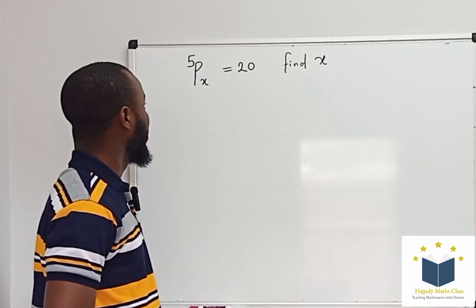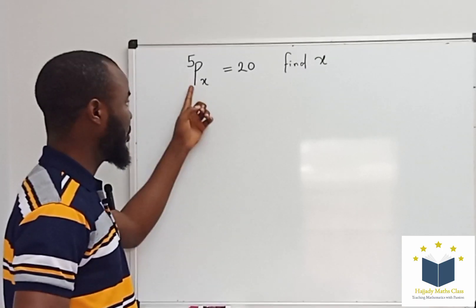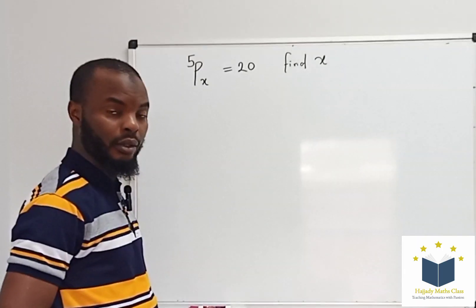Hello viewers, welcome back to the other class. So, we want to find the value of x when you have 5 permutation x equals to 20, what is x.